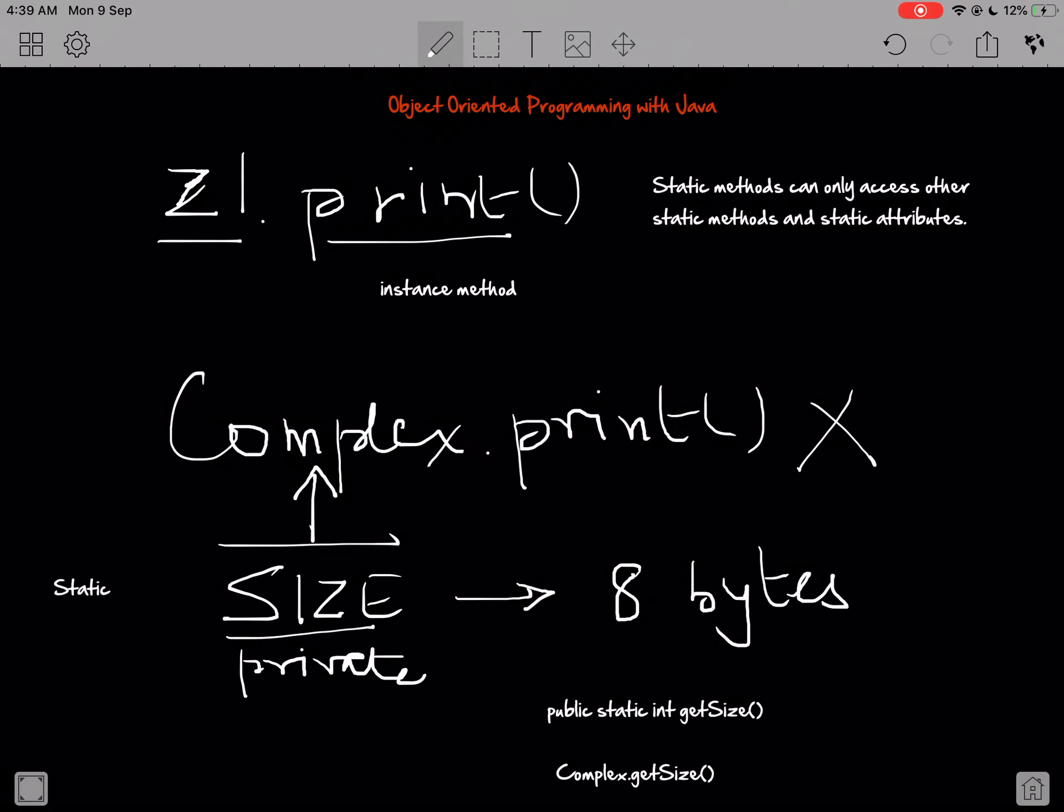So this basically means that a static method like getSize will not be able to access real or imaginary, which makes sense because we sometimes call something like Complex.getSize without even making an instance of the complex class. So let's say we don't have a z1, z2, z3 anything and we just want the size, how much size it's going to take in memory. So I would do Complex.getSize without even having an instance. So there is no real or imaginary part of any complex number yet. So I can't access real or imaginary inside of getSize.